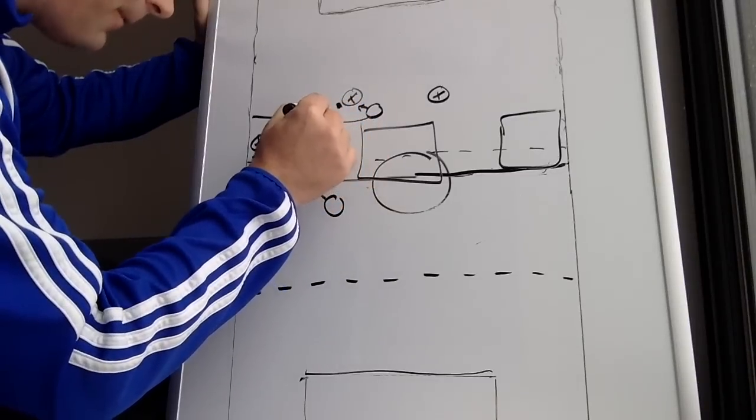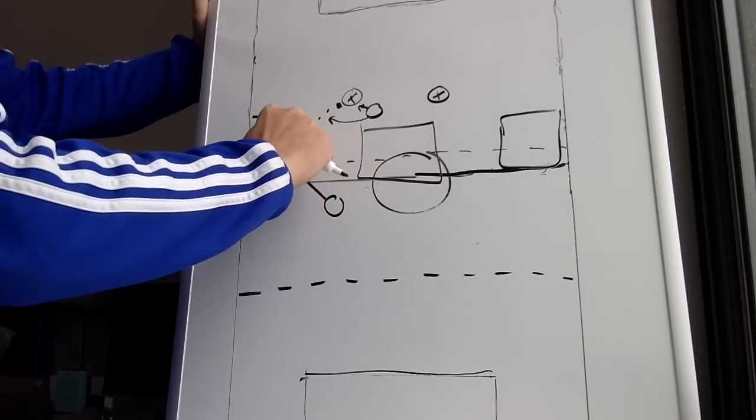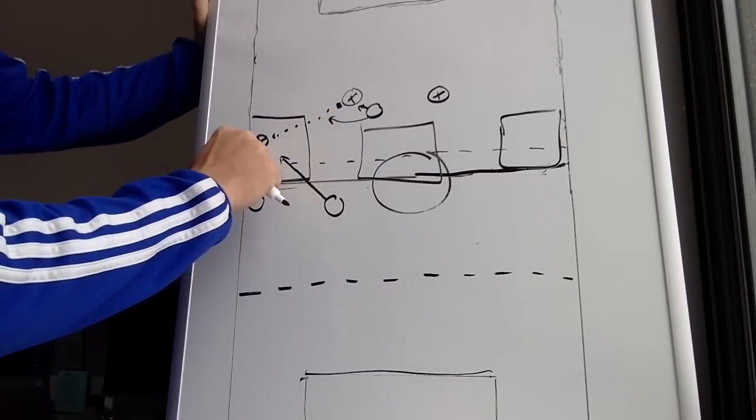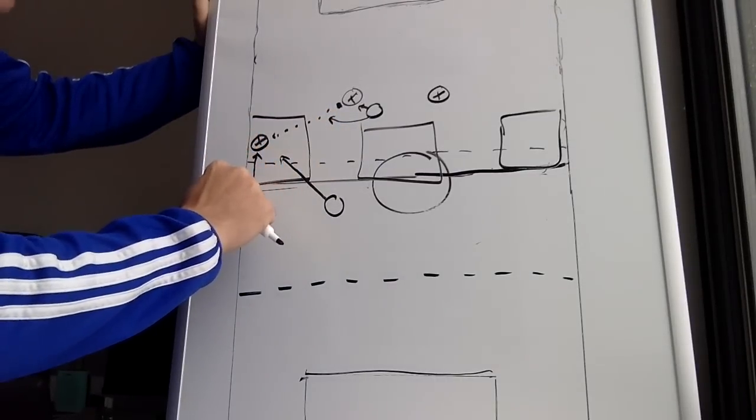He will step in front of the center back. Now you're talking about there is no outlet back. He's under extreme pressure, this wing back with his head down. Can't come forward.